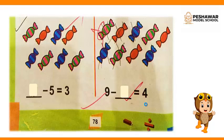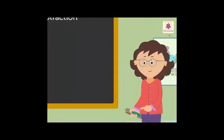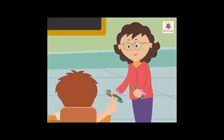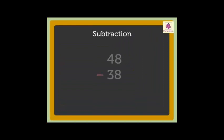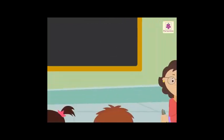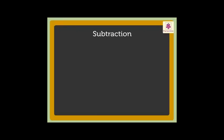Okay boys, we will see another video in which we will see subtraction in two-digit numbers — tens and ones. I have 48 pens. I give 38 pens to Sam. How many pens are left with me? I will have to subtract 38 from 48. 8 minus 8 is equal to 0. 4 minus 3 is equal to 1. Thus the difference between 48 and 38 is 10. There are 10 pens left with me. We use the subtraction sign to write the subtraction sentence.